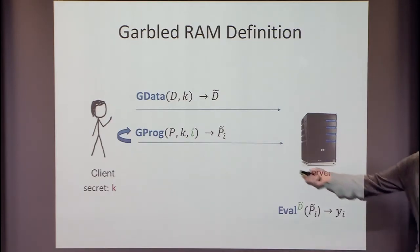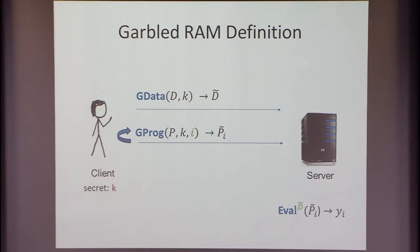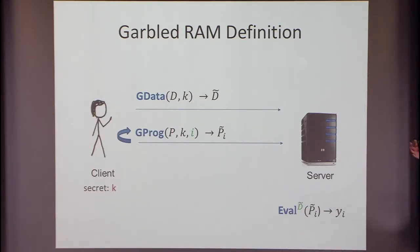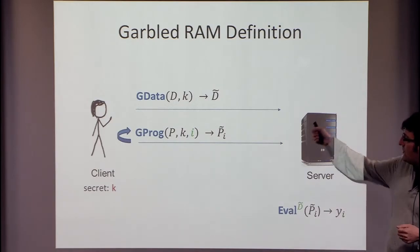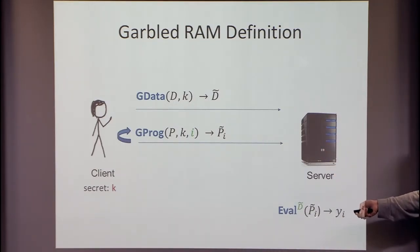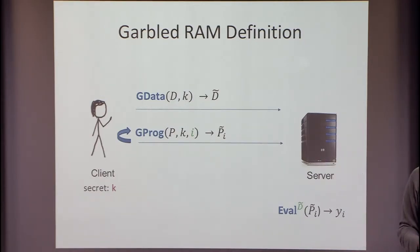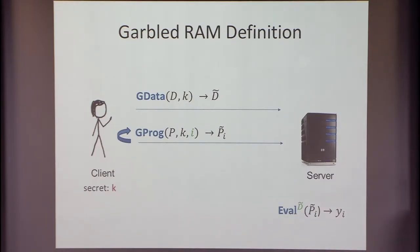Let me give a slightly better definition. There are two algorithms: one that garbles data (takes data and a key, creates garbled data to outsource to the server) and one that garbles programs P (hard-coding all inputs in the program itself), then sends the garbled program to the server. The server evaluates the garbled program by using memory access to garbled data. You can garble many programs on the same data — think of it as many different database queries. These programs can both read and write, so the order in which they're executed matters.